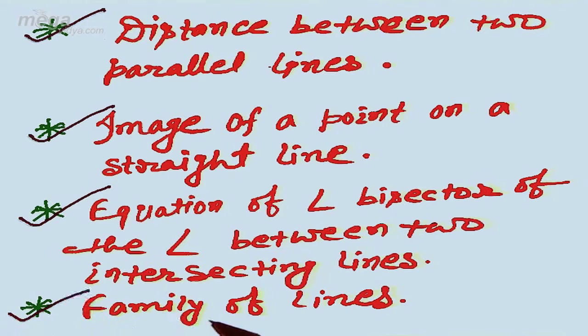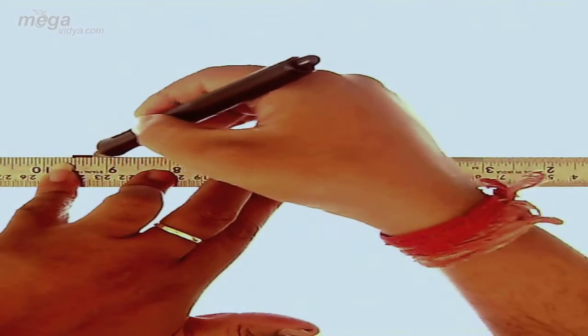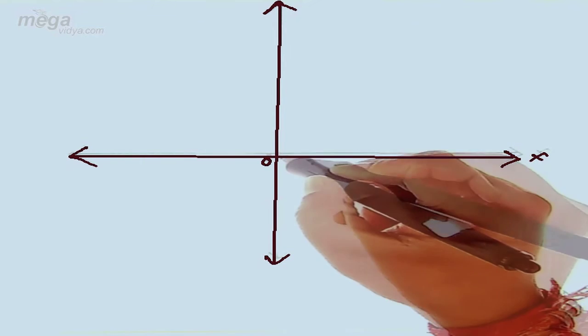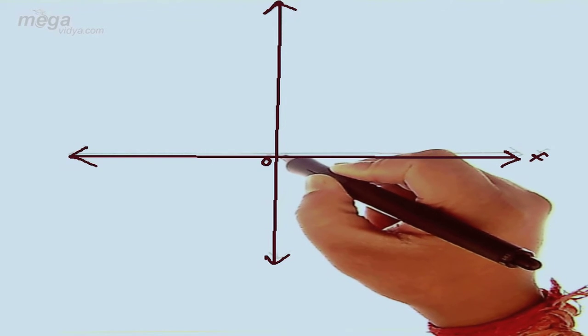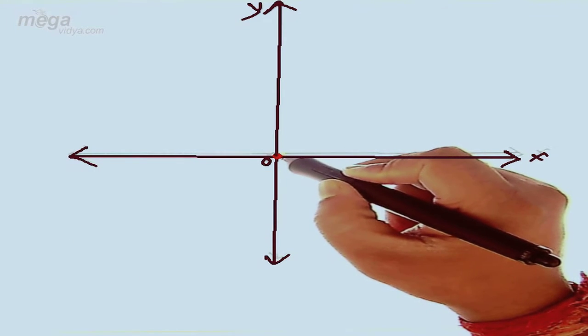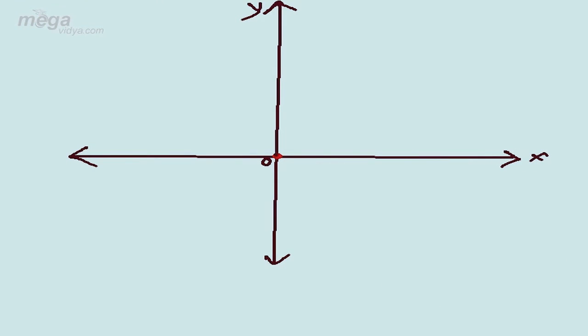Next is the equation of the angle bisector of the angle between two intersecting lines, and last but not least, family of lines. So students, I'm starting with the introduction — what is a straight line and which graph it will represent. You can see that if there are two fixed lines, one is called the x-axis and one is called the y-axis, and you are standing at the origin.